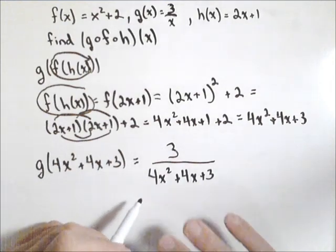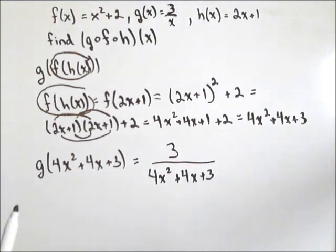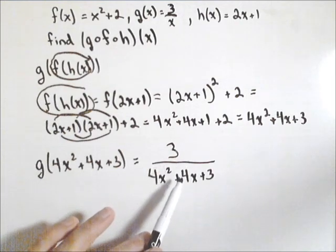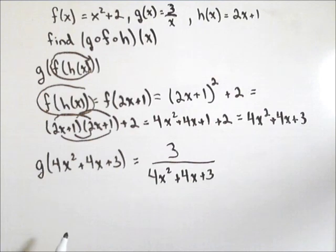So that's how we can handle the triple composition. If we had to compose another function on the outside, well now I've got g of f of h of x, I could put that in as the input for the next function. So just work from the inside out.